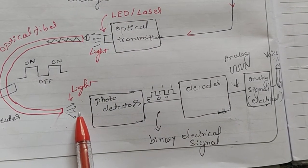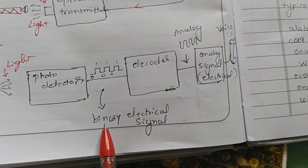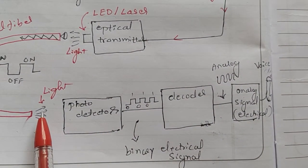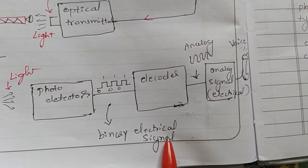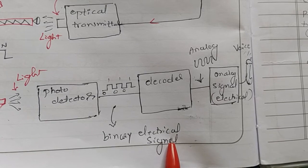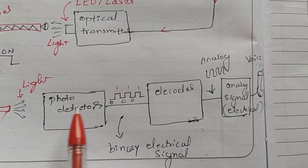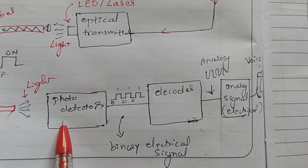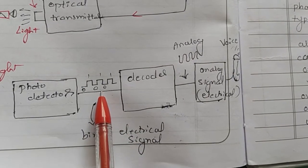The pulses of optical power are fed to a photo detector, which converts light into an electrical signal. Since the input is in pulsed form, the output of the photo detector is also a pulsed binary electrical signal. In modern communication systems using silica fiber, an indium gallium arsenide (InGaAs) photo diode is used as the photo detector, converting light into electrical energy based on the principle of the photovoltaic effect.